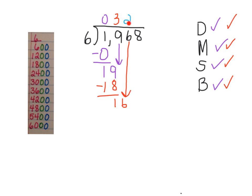Then I multiply this 2 times the 6. 2 times 6 equals 12. Then I subtract. 16 minus 12 is 4. Then I bring down the 8.